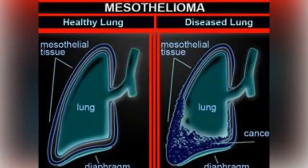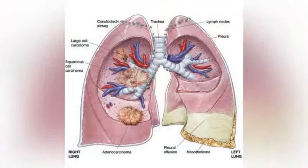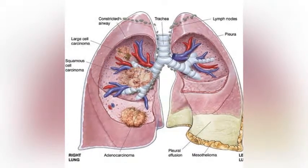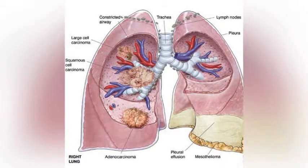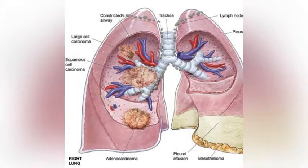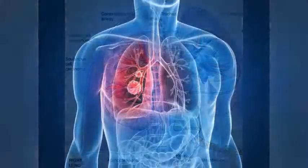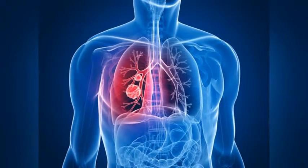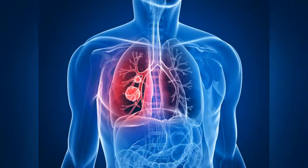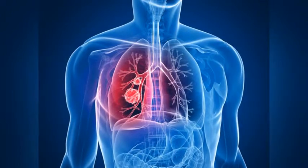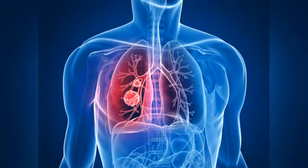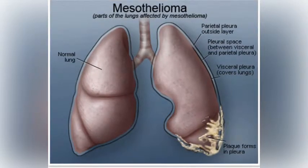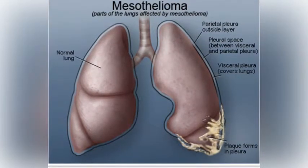In central Cappadocia, Turkey, mesothelioma was causing 50% of all deaths in three small villages: Tuzkoi, Karain, and Sarıhıdır. Environmental exposure to asbestos has caused mesothelioma in places other than Turkey, including Corsica, Greece, Cyprus, China, and California. In the northern Greek mountain town of Metzovo, this exposure had resulted in mesothelioma incidence around 300 times more than expected in asbestos-free populations, and was associated with very frequent pleural calcification known as Metzovo lung.